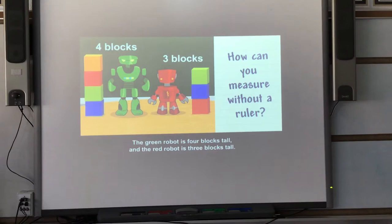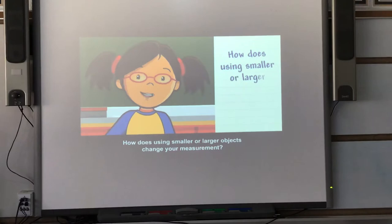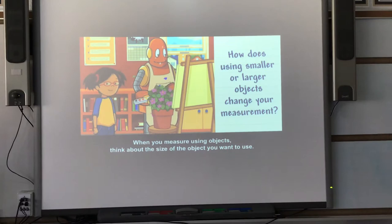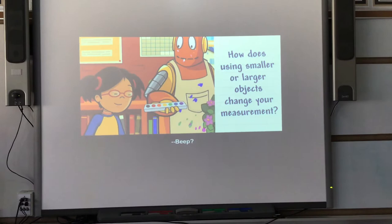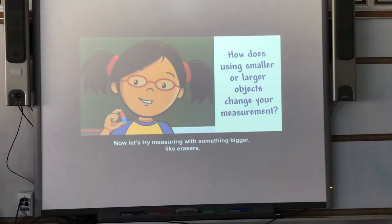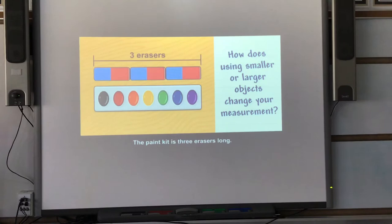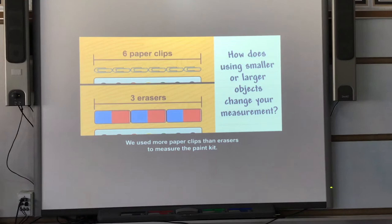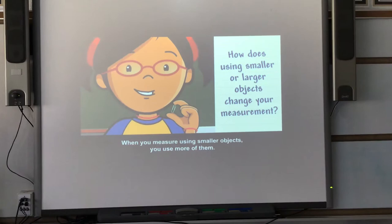How does using smaller or larger objects change your measurement? When you measure using objects, think about the size of the object you want to use. Let's measure this paint kit using paperclips — it's six paperclips long. Now measuring with something bigger, like erasers — the paint kit is three erasers long. We used more paperclips than erasers to measure the paint kit. When you measure using smaller objects, you use more of them; when you measure with larger objects, you use fewer.